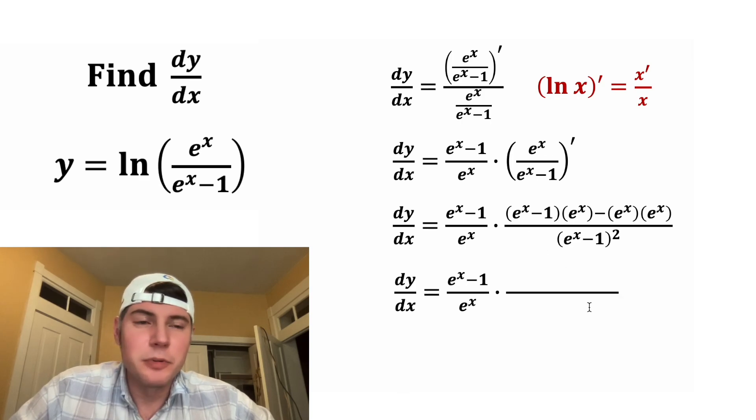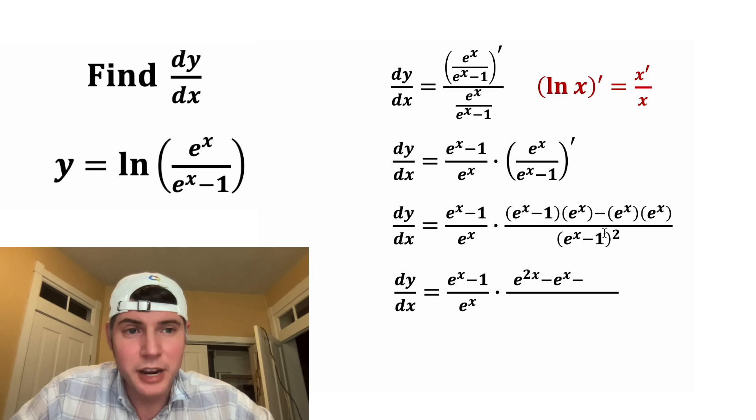So now let's clean this up with some distribution. e to the x times e to the x would be e to the 2x, and negative 1 times e to the x is negative e to the x. And then we're going to subtract. And then once again, e to the x times e to the x is e to the 2x. And on bottom, we have e to the x minus 1 squared, so I'm going to write it multiplying by itself.